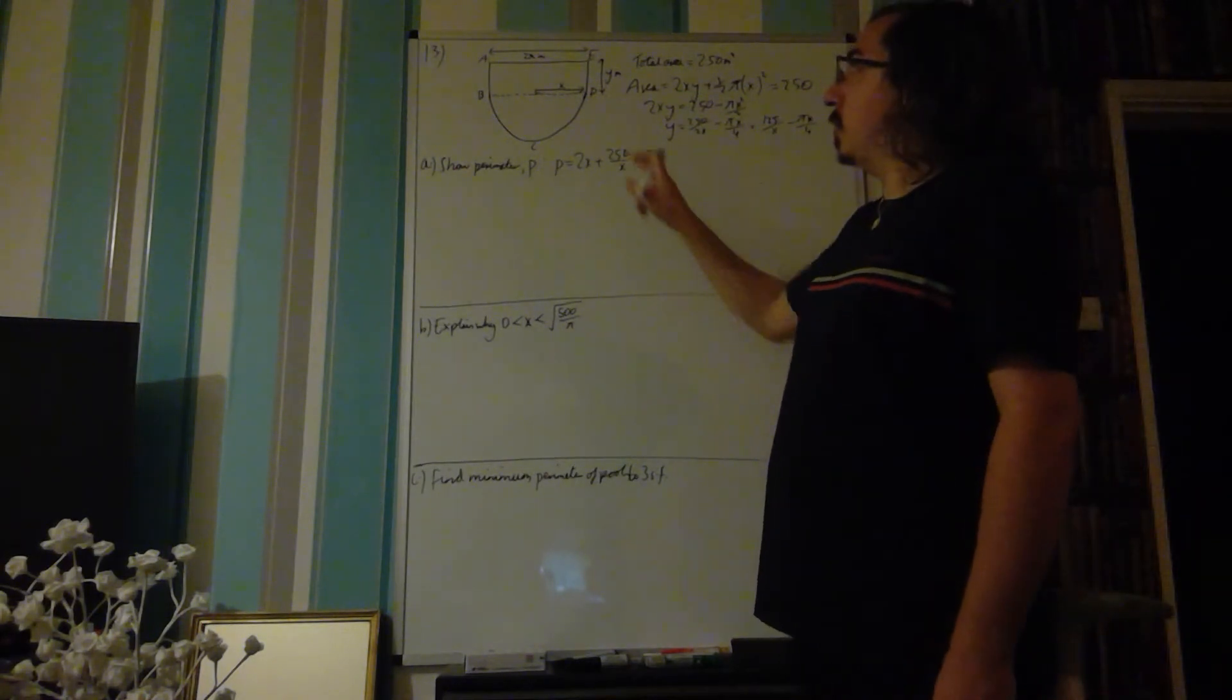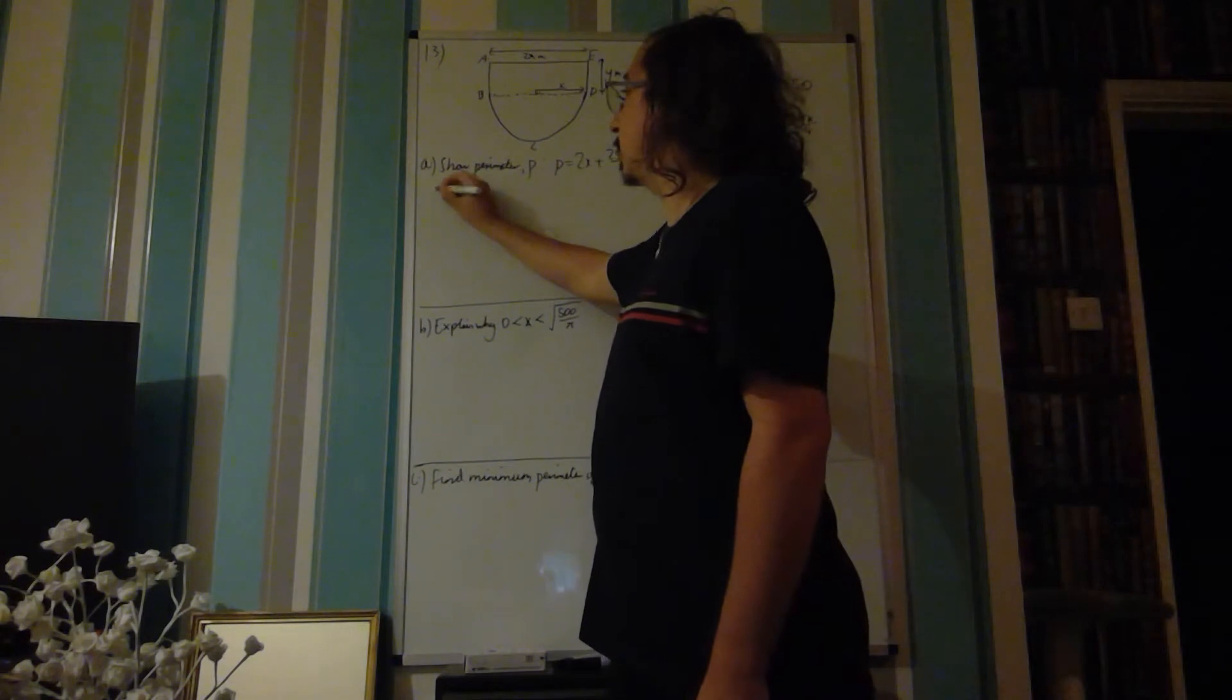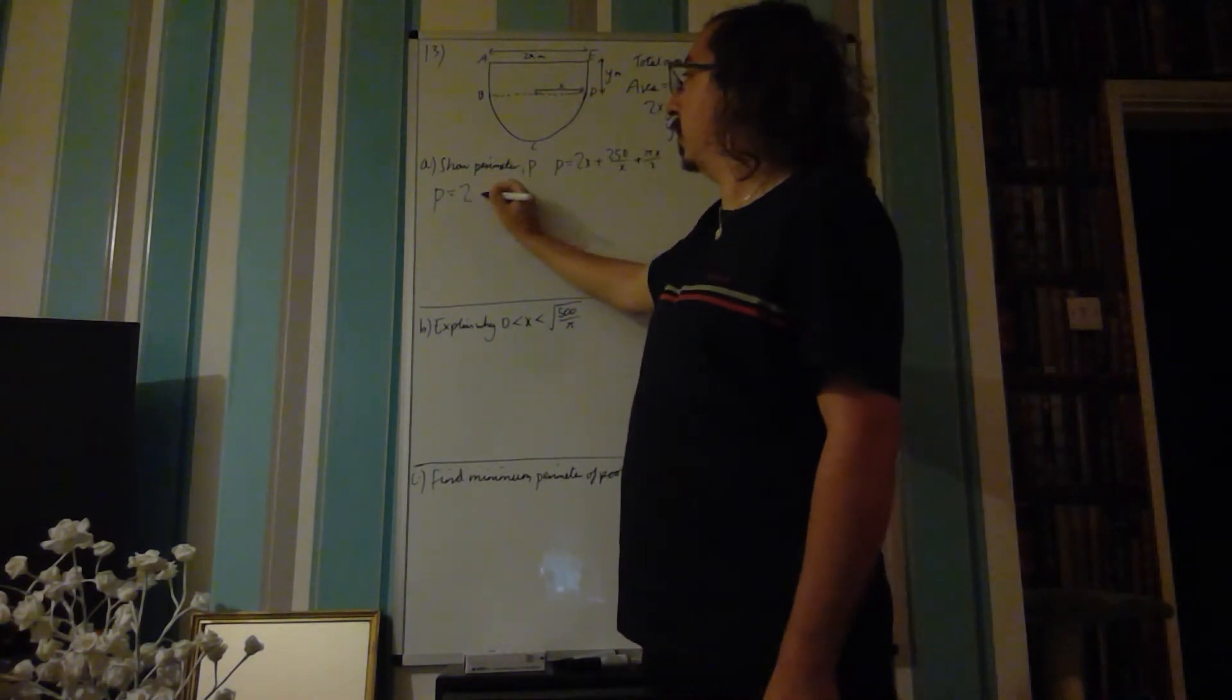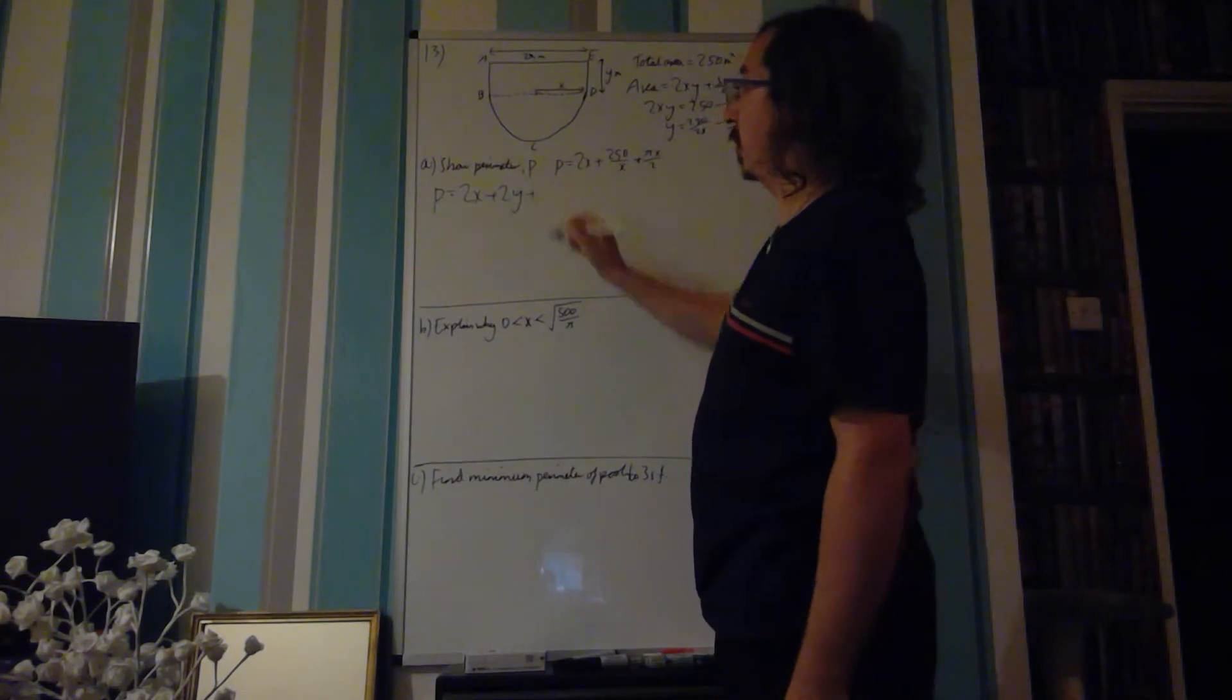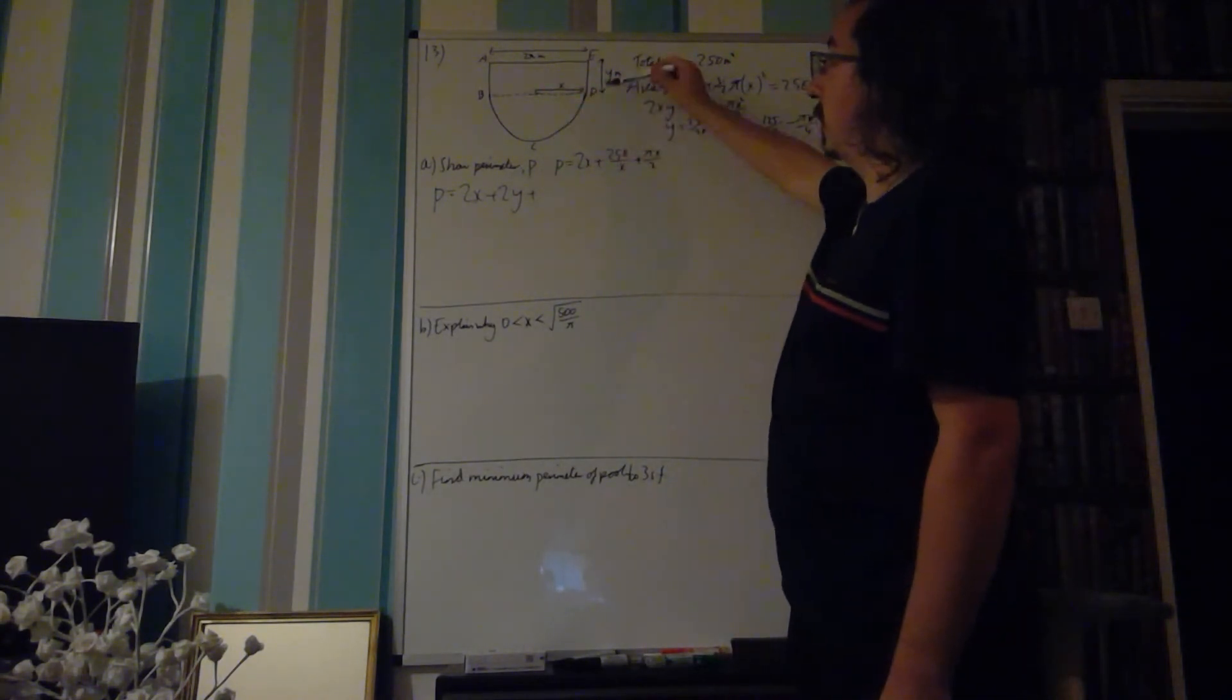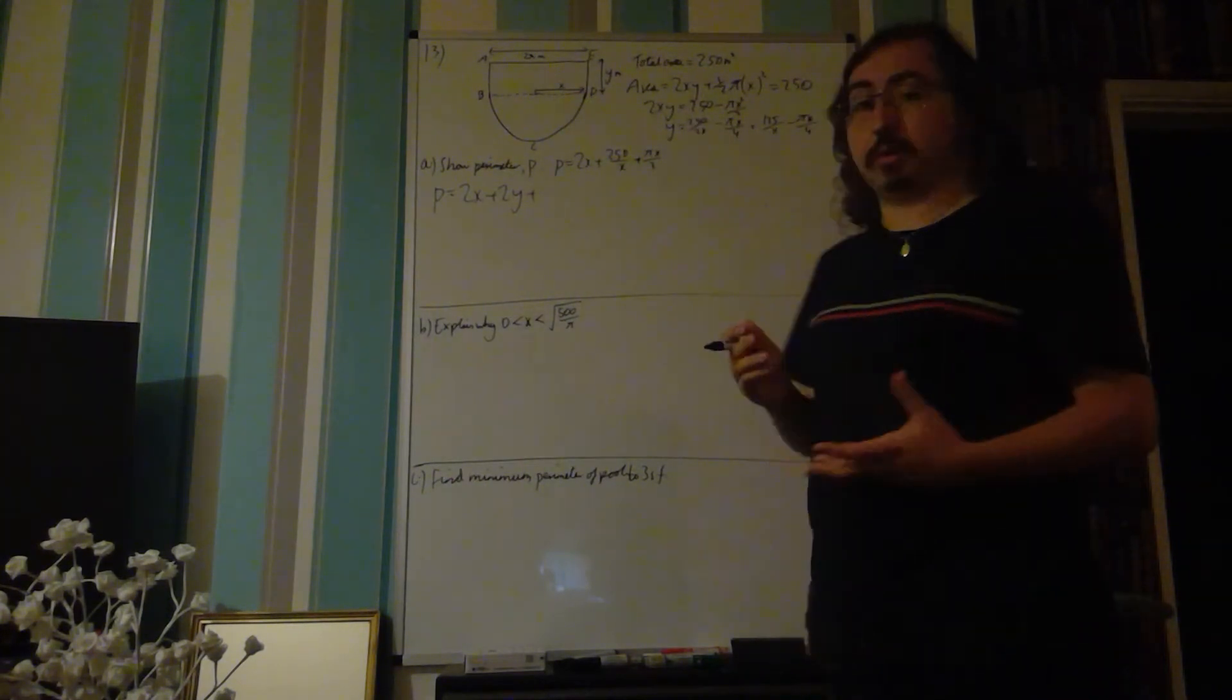Let's look at what we would normally class the perimeter as. Our perimeter normally, we would have 2x plus this y and this y, so 2y plus this length BC here,